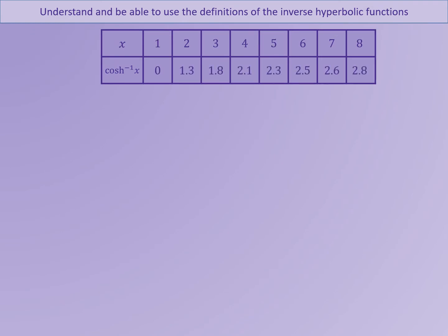We're now going to do the same for inverse cosh of x. You may notice that we're only taking positive x values here. This is because if you try to find inverse cosh of a negative value, you'll get a calculator error. You may be able to see why this is by considering the y equals cosh x graph — because there are no negative y values on this graph, we cannot find inverse cosh of a negative as these values don't exist.